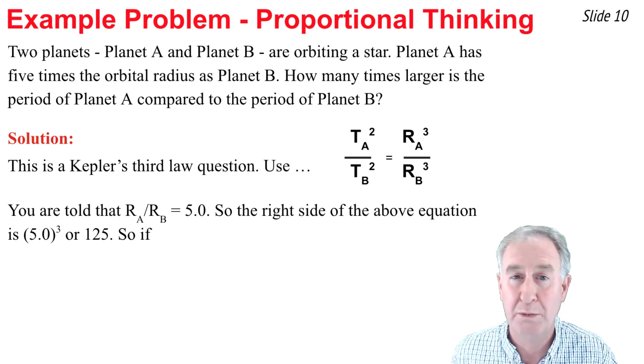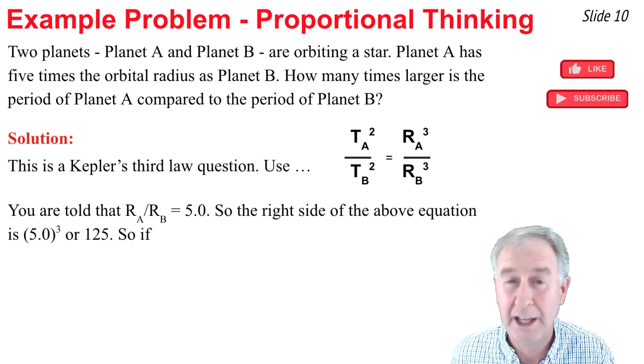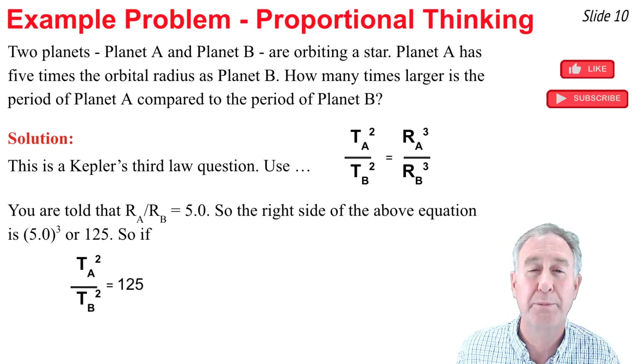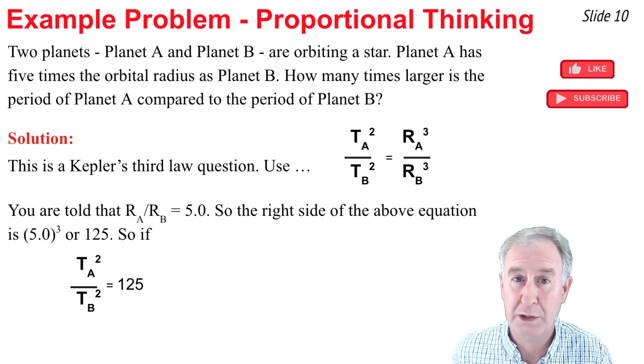So if I take this ratio of rA to rB and cube it, I have the right side of the equation known as 125, and that's equal to the ratio of the period squared for these two planets. Now if I want to know the ratio of the periods, I need to take the square root of the left side of the equation and the square root of the right side of the equation,